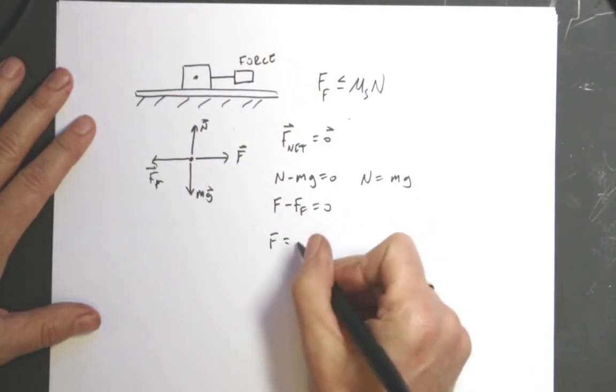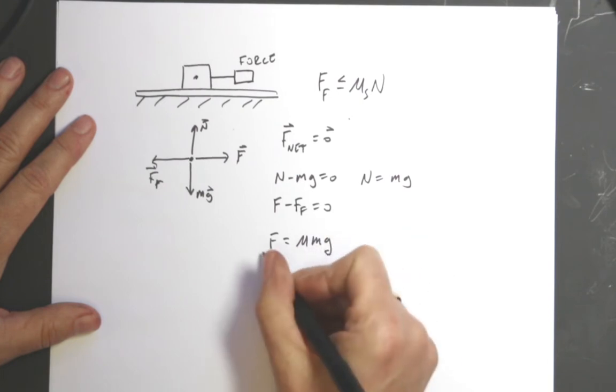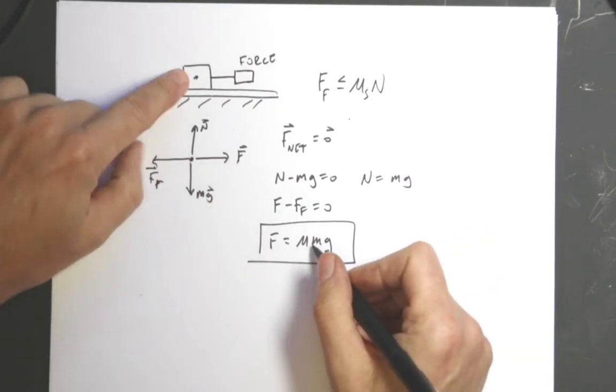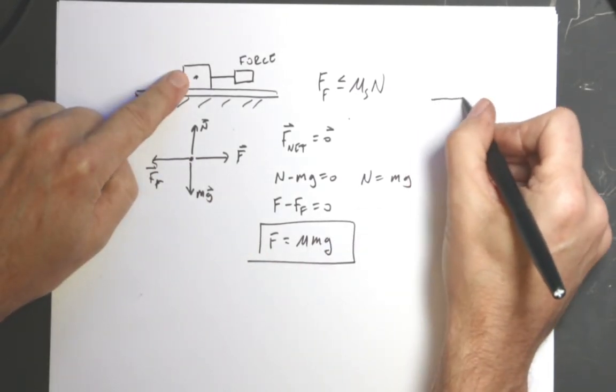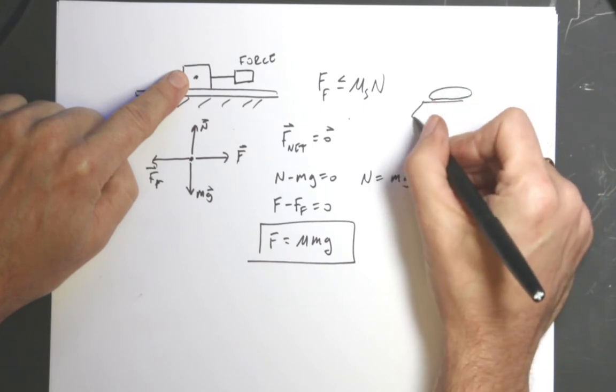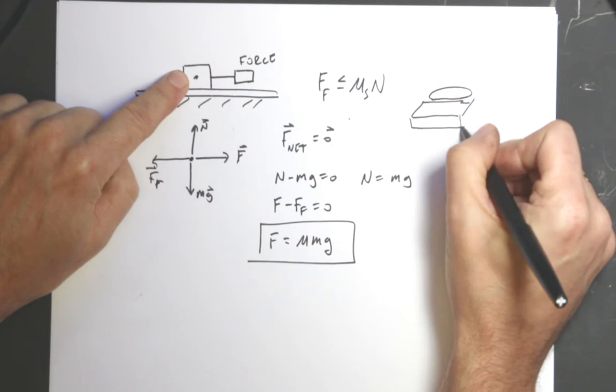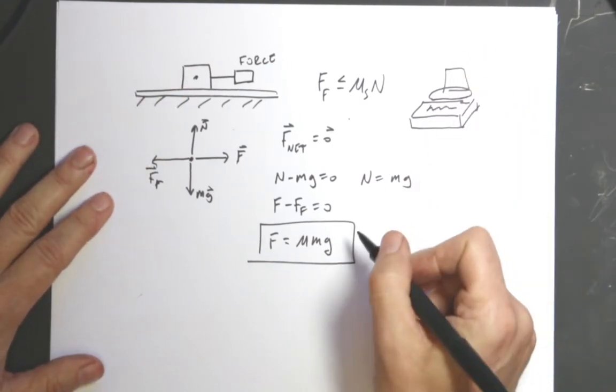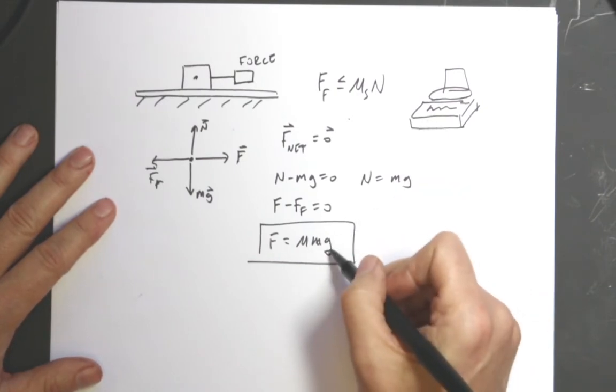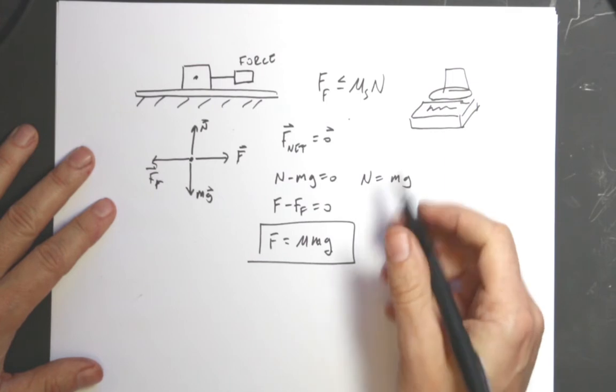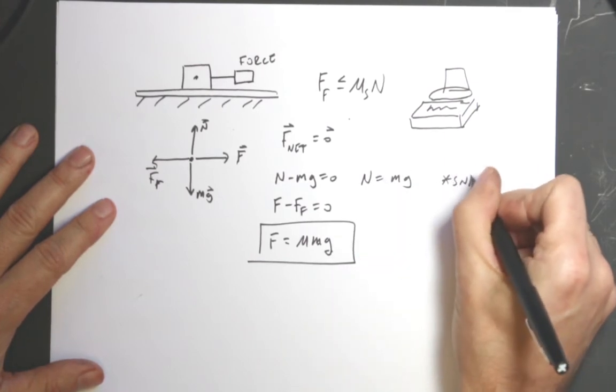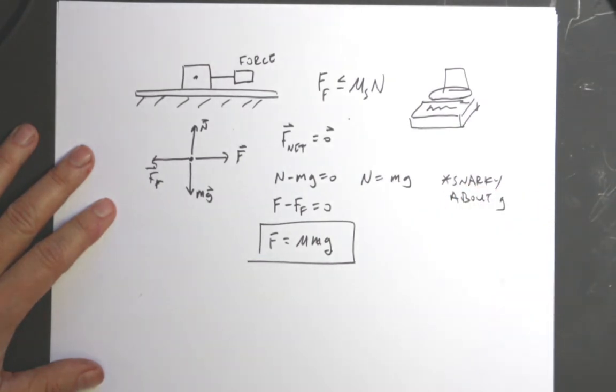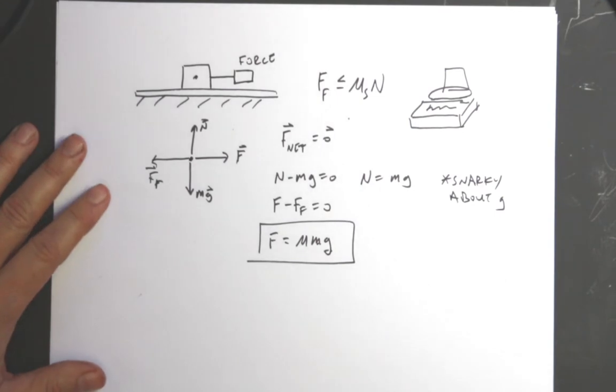If I solve this for the normal force I get N equals mg. If I put that in and substitute in for the maximum frictional force, I get F equals mu mg. So if I measure the spring force and I measure the mass, you got to put that on a balance. There's my balance, I put the little block on there, and I get the mass.